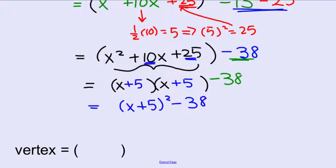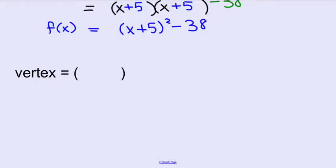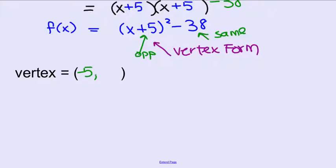What we've done is we've converted this quadratic equation to vertex form so that we can now find the vertex, the critical point. When you find the vertex, you're always opposite of that sign and then the same. So the vertex is opposite, which is minus 5, and then the same of negative 38.